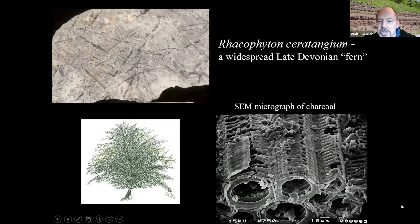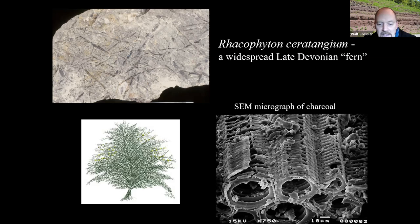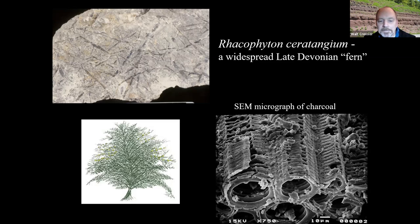In closely examining the charcoal, as you can see in this SEM micrograph on the lower right — which I did at the University of Pennsylvania's dental school — you can see these tube-like structures, which are the conducting structures for water to go through a plant. Because these particular structures have been found in silicified fossils of Rackophyton seratangium, which was a widespread late Devonian fern — used loosely, it was a homosporous herbaceous plant — that was primarily what was burning. Examining piece after piece of charcoal, it was apparent that it was mainly Rackophyton that had been burned.